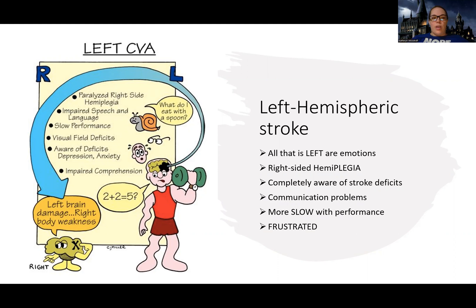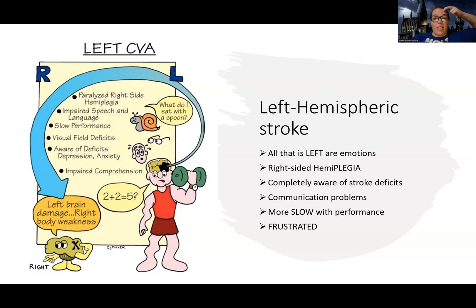One thing I want to bring up first is that this can get very confusing. People see the word 'left hemispheric' and there's also the word 'hemiplegia' that we're going to talk about soon — and sometimes people get these mixed up. So when I say left hemisphere, I'm talking about the left side of your brain. Think left hemisphere, left brain stroke — which side of the brain is the stroke happening.